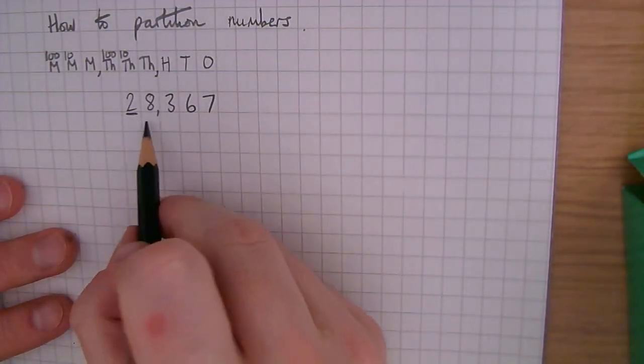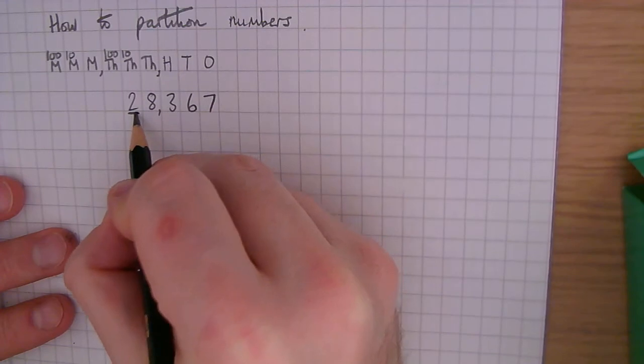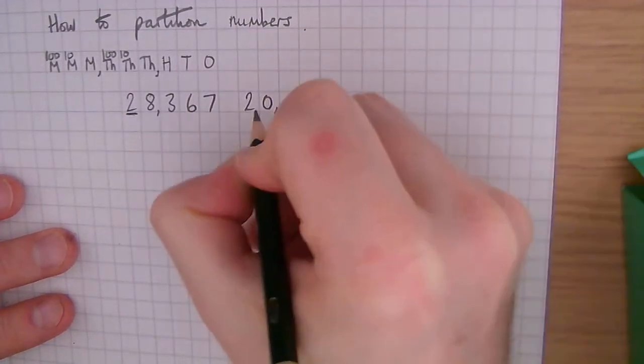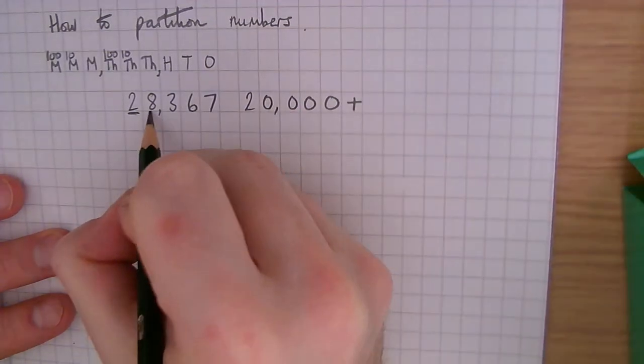So we're going to do this one: 20,000 add 8,000, so it's in the thousands column.